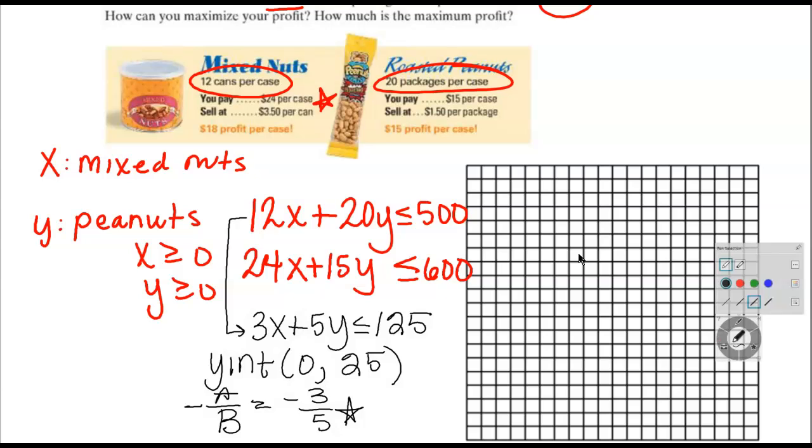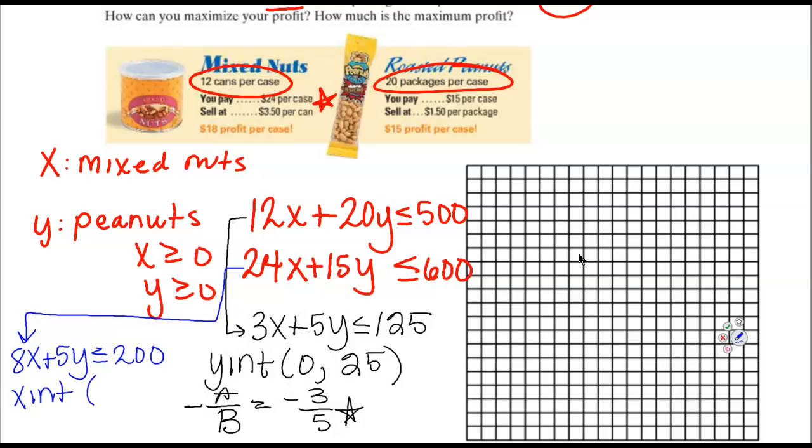Okay, let's go ahead and take a look at my next constraint because I can simplify this too. Let's see, I'm going to simplify this right here. So I've got 24, I've got a 15, I've got a 600. All of those can be divisible by 3. So this is going to be 8X plus 5Y, and that's going to be less than or equal to 200. The X-intercept here, that is going to be 25, 0. And the Y-intercept is also a whole number. So for this one, I don't have to worry about finding slope because my X-intercept and my Y-intercept are both whole numbers.